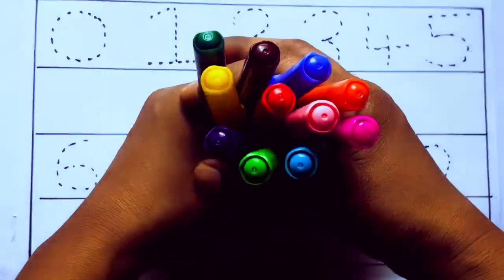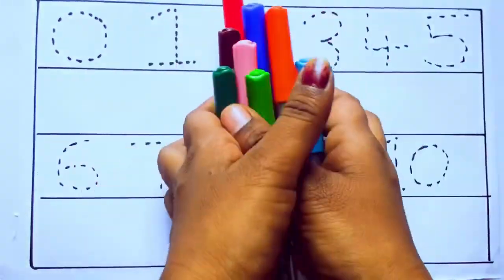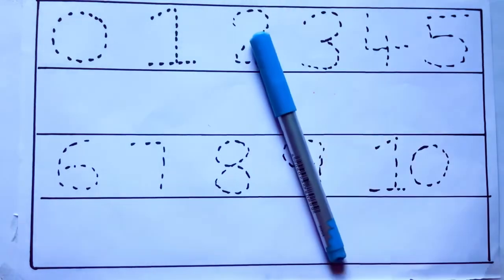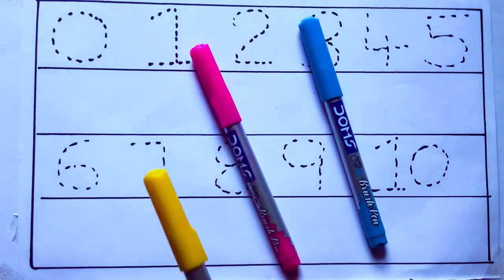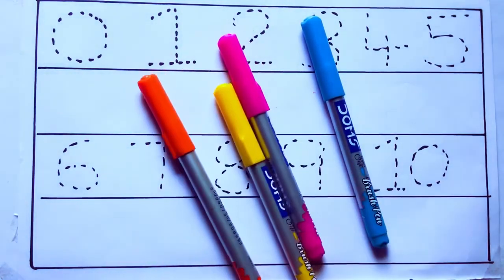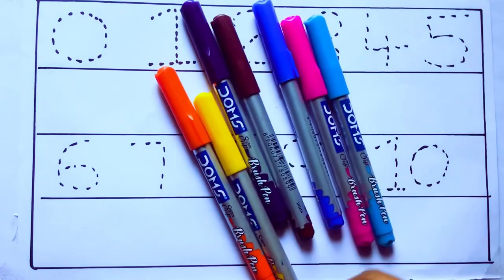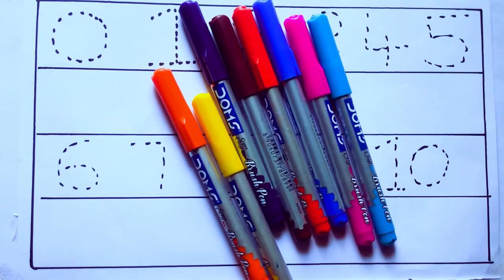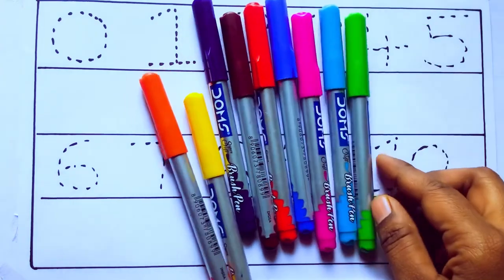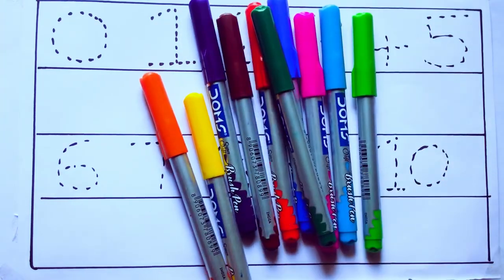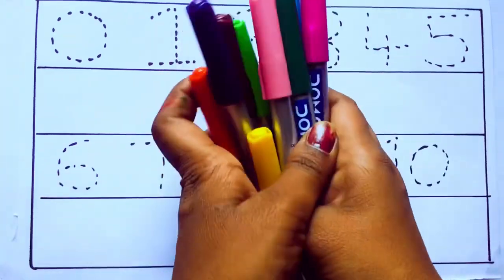Let's learn some colors. These are all the color pencils. Let's learn the names: sky blue color, pink color, yellow color, orange color, violet color, blue color, brown color, red color, green color, and pink color.